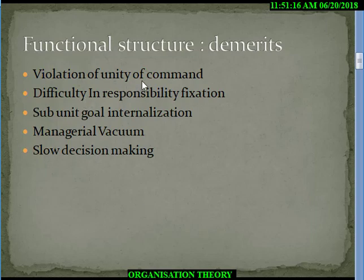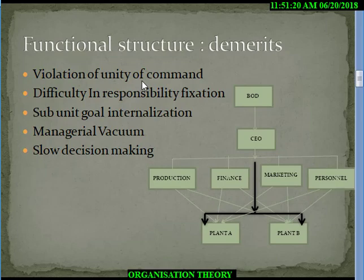In the same way, plant B also takes help from different functions. So plant A is actually receiving orders from multiple bosses — the CEO, the production head, the finance head, and so on.